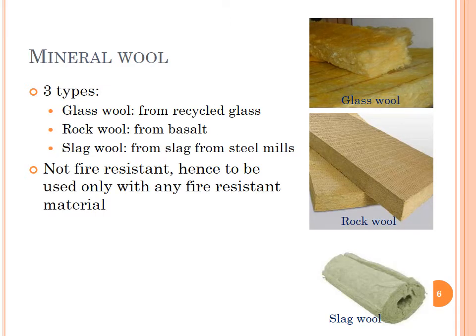Mineral wool — they are mainly of three types: glass wool, rock wool, and slag wool. Glass wool is prepared from recycled glass, rock wool from basalt, and slag wool from steel mills. They are not fire resistant, hence to be used only with any fire resistant material.